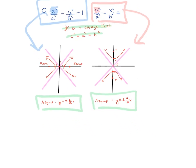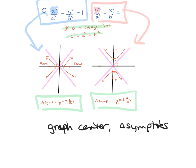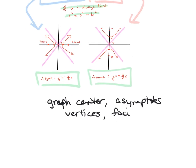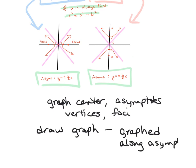You're going to square root a squared and b squared to get the a and b values. When we do these problems, we're going to graph the center, the asymptotes, the vertices, and the foci. Then you draw your graph along the asymptotes using U shapes or C shapes, whether they're backwards or upside down, based off the asymptotes. Let's try our first example now.